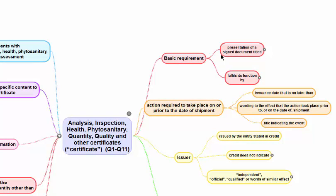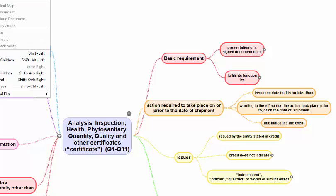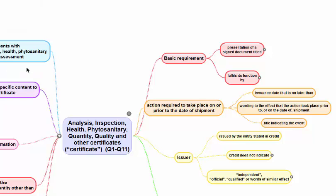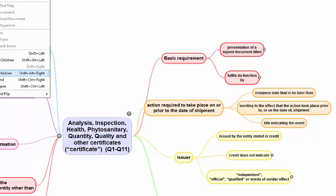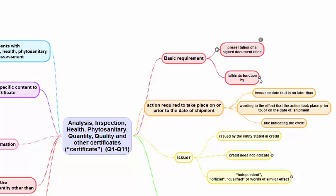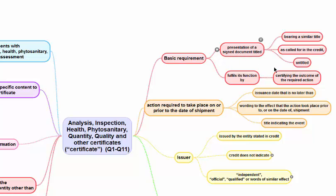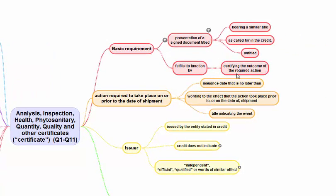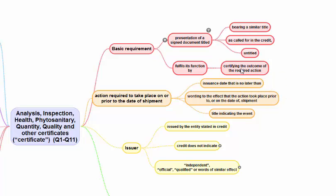The basic requirement is that a presentation of a signed document titled whatever certificate has been called for — as it fulfills its function — should be enough. It should fulfill the function by certifying the outcome of the required action. If it says quantity certificate, it should state what quantity has been measured and what was found. If it is an analysis certificate, it should say what test has been performed, what analysis has been done, and what is the result.